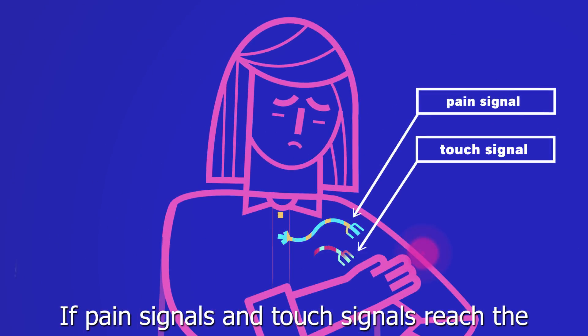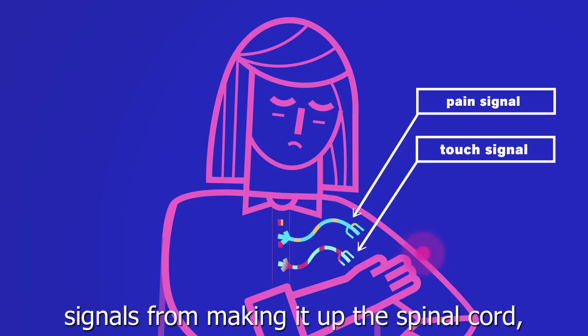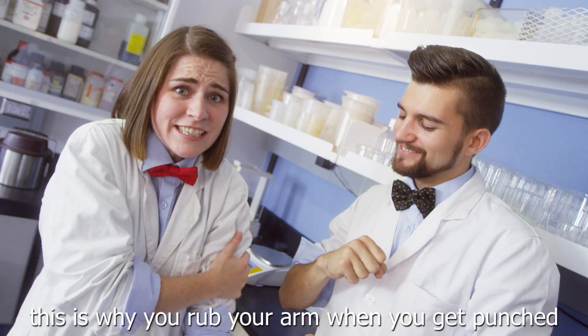If pain signals and touch signals reach the spinal cord at the same time, the touch signals block some of the pain signals from making it up the spinal cord, diminishing the pain. This is why you rub your arm when you get punched!